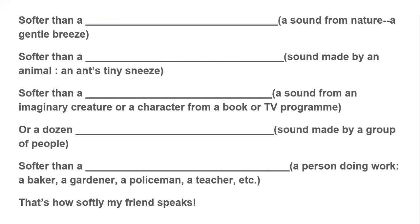Now for the third example — and as I mentioned, this one has words that do not rhyme, which the question allows. Softer than a floating cloud — you've all seen clouds in the sky, and when a cloud is floating, you hear no sound from it at all. Softer than an alligator's hiss — I'm using 'an' because alligator starts with a vowel sound. An alligator is a large reptile that looks like a crocodile, and a hissing sound is the kind of sound a snake would make.